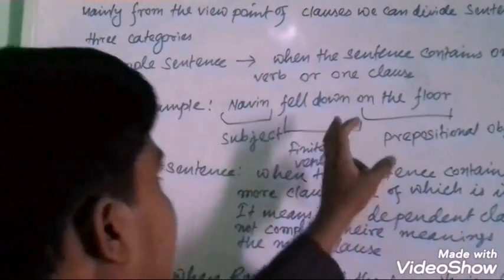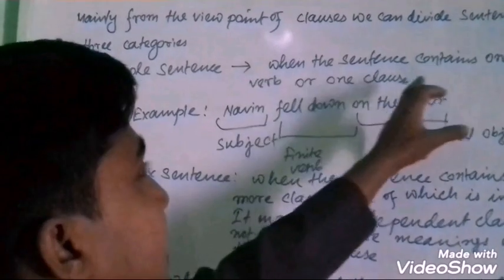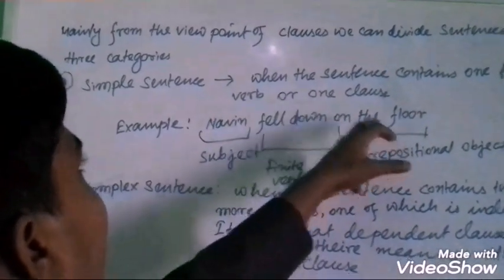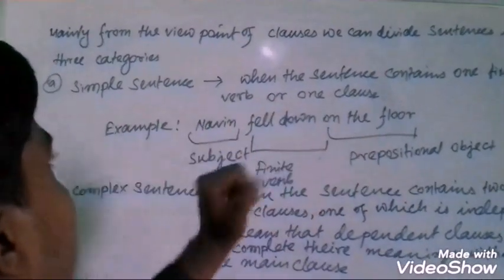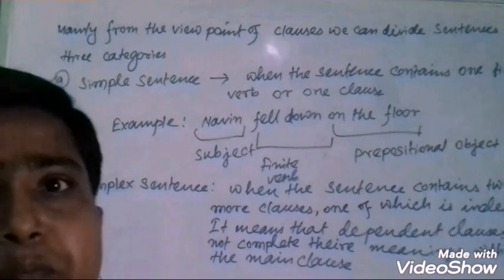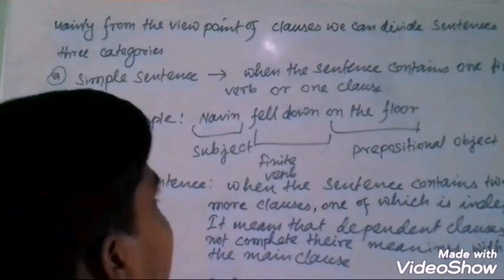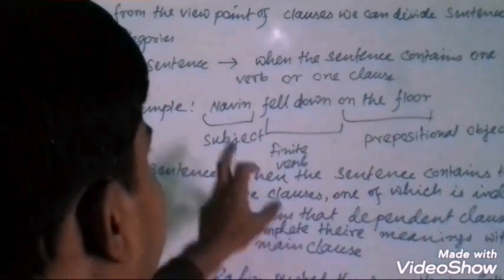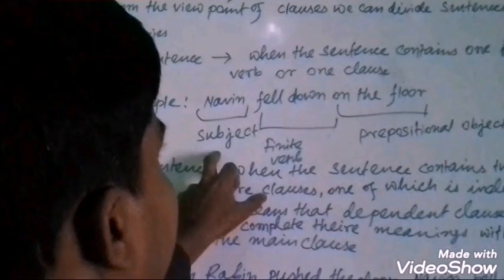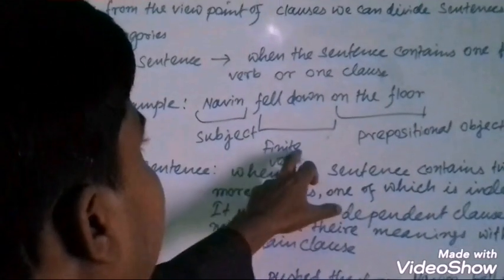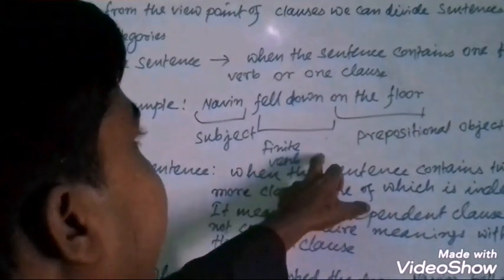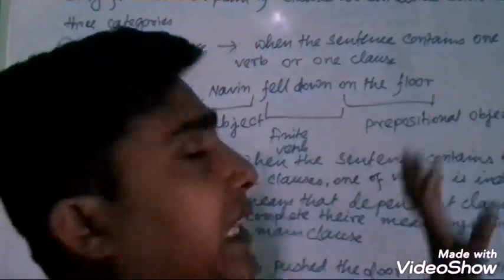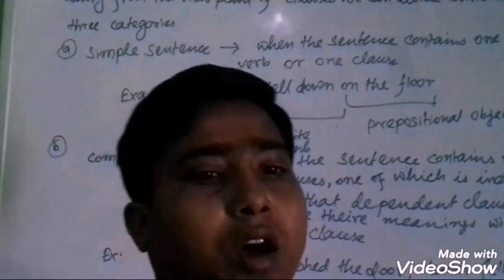When the sentence contains one finite part or one clause, that is a Simple Sentence. Here, Nubing is the subject, Nubing is the finite part, and 'on the floor' is the prepositional object.